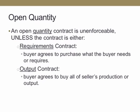There are some exceptions to that. You could have an open quantity term if it's a requirements or output contract. In a requirements contract, the buyer agrees to purchase what the buyer needs or requires. In an output contract, the buyer agrees to purchase whatever the seller can produce or output.